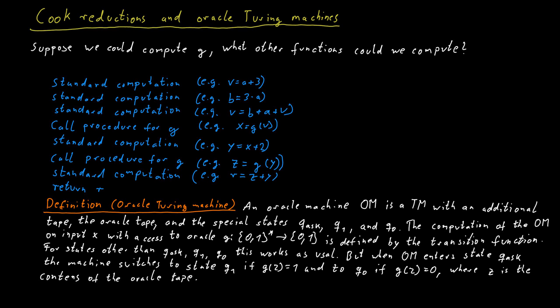So basically what the Turing machine can do is it can write down a question in the form of a bit string onto the Oracle tape. It then enters the internal state qask, which means Oracle, please tell me whether G of this question is equal to one or zero. And the Oracle will instantly reply and switch the machine to internal state q1 or q0 depending on whether G of Z is one or zero.